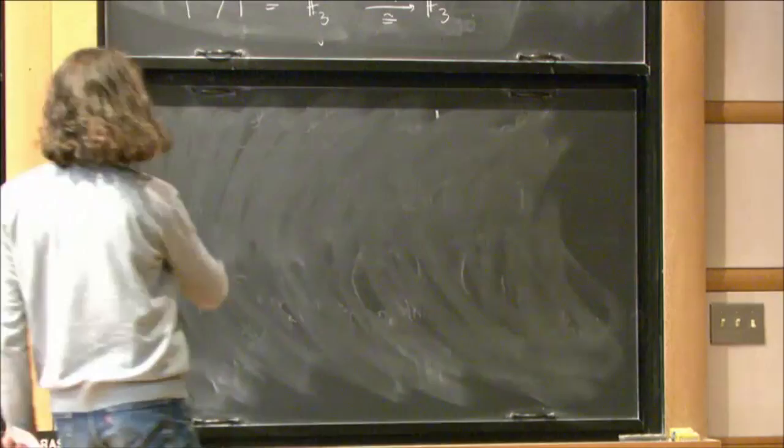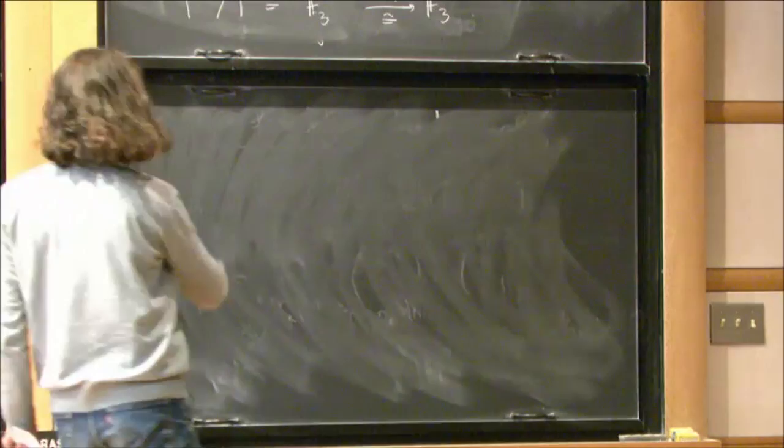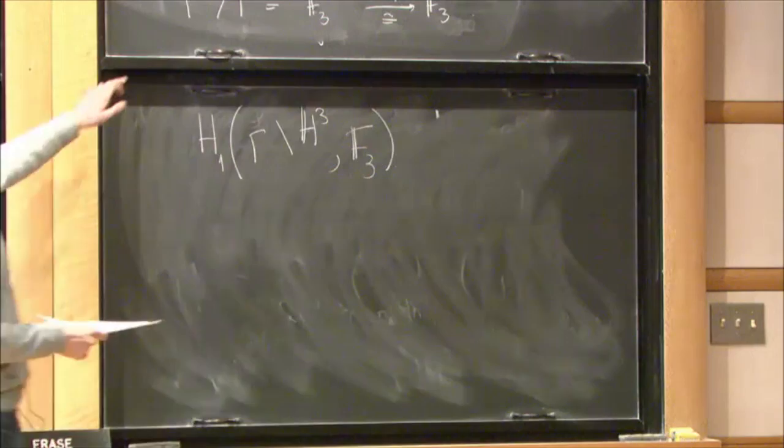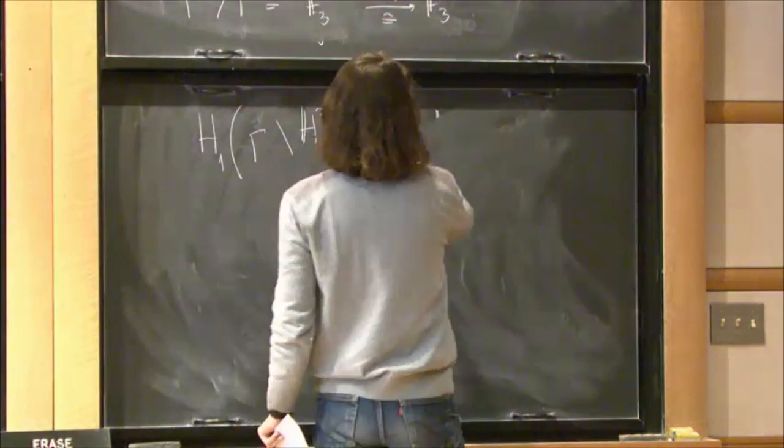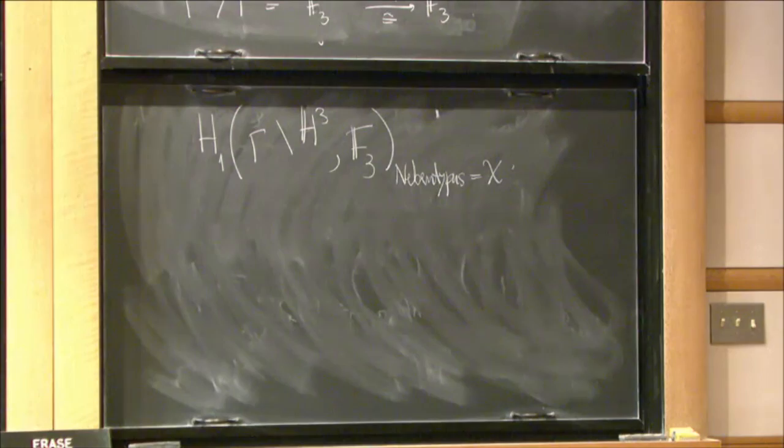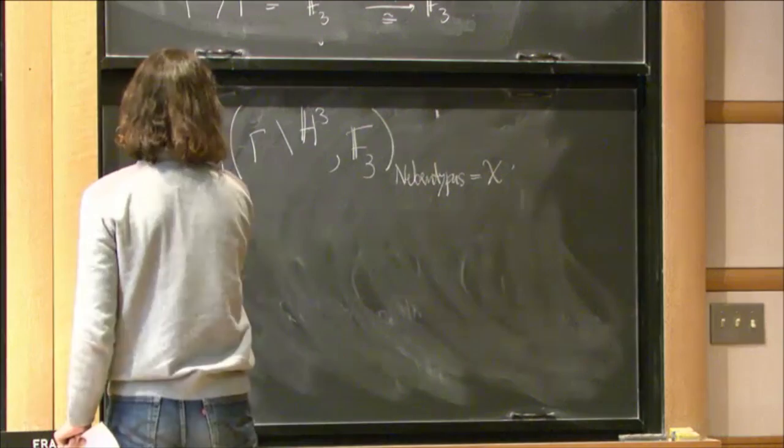Okay. And so, I will look at the following homology group. So, I will look at the H one, H three modulus congruent subgroup gamma, with coefficients in F three. And acting on it, because gamma is normal in gamma tilde, I have this quotient gamma tilde over gamma. And so, I take the eigenspace for this character chi. And that's also called fixing the nebentype. So, it takes the part nebentype chi.